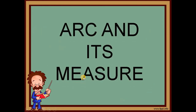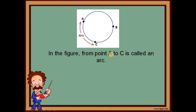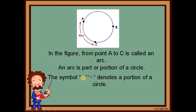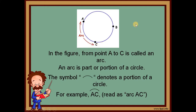Let's move on to arcs and their measure. In the figure, from point A to point C, this is called an arc — ang tawag natin doon is an arc. An arc is a portion of your circle, or simply part of your circle. We use the symbol that looks like a rainbow to denote a portion of a circle. So we call this arc AC. We now have four symbols: a line with arrows in both directions, a segment, a ray with one arrow, and this new one — an arc.